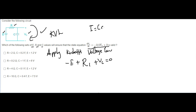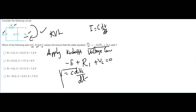The formula for current i is equal to C times dVc/dt. This is the characteristic relationship between current and voltage for a capacitor. So the voltage is changing with time, and I can write: i = C · dVc/dt. Don't forget this formula relating i with respect to voltage.